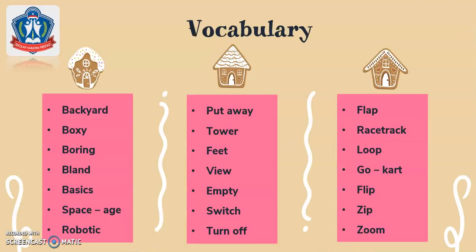For our vocabulary, we have the following words: backyard, boxy, boring, bland, basics, space, age, robotic, put away, tower, feet.